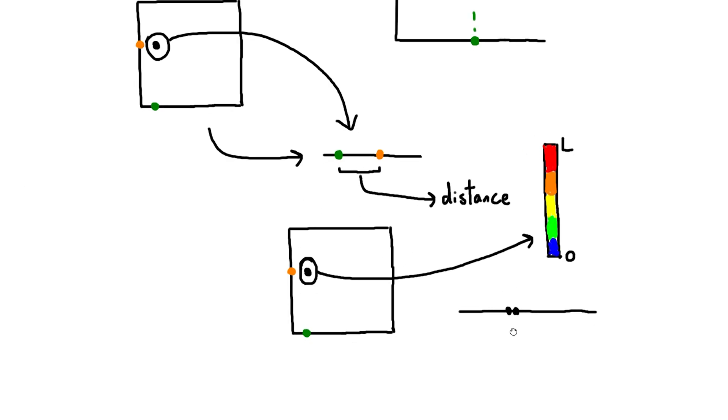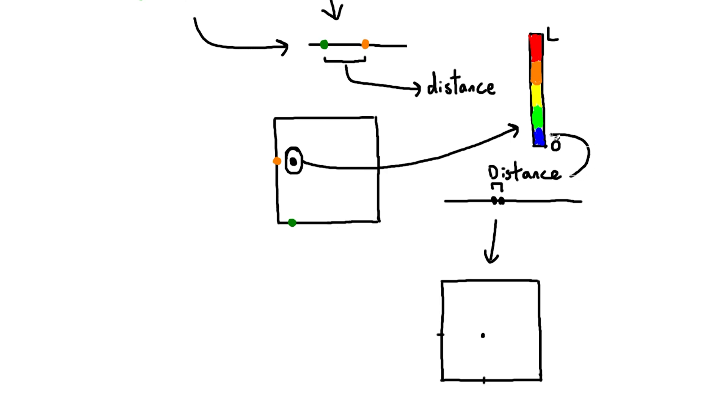Take any pair of points on our line, find the distance between them, and we're going to assign each distance a color. Then we're going to go to the corresponding singular point on the square, and then color it in with that color. So in this example,